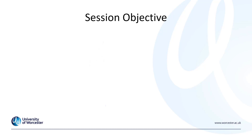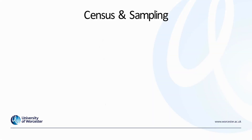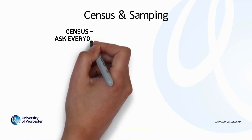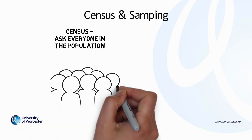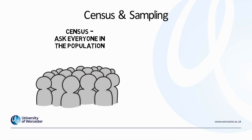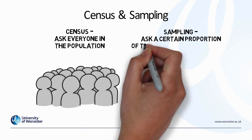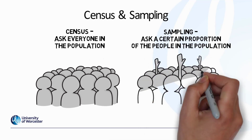The objective for this session is to review the different types of sampling procedure. When it comes to research, it's possible to do a census whereby we'd ask everybody in the population that we're interested in researching, or we can select only a sample — a certain proportion of the people in the population. And this is the process of sampling.